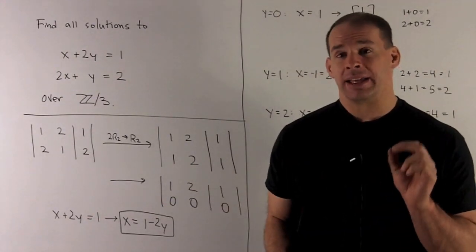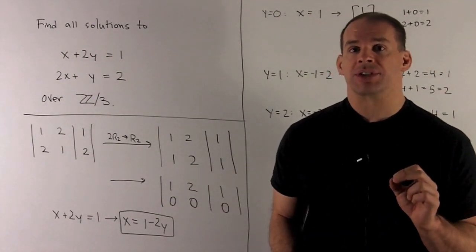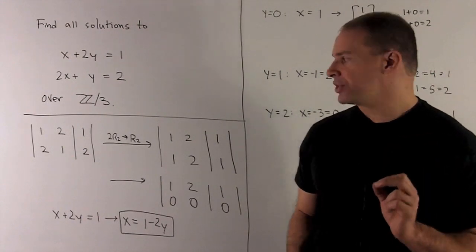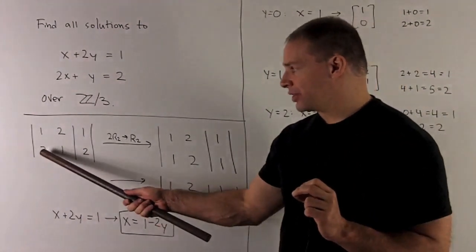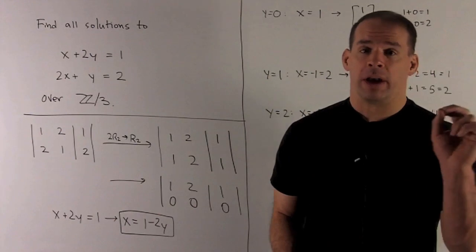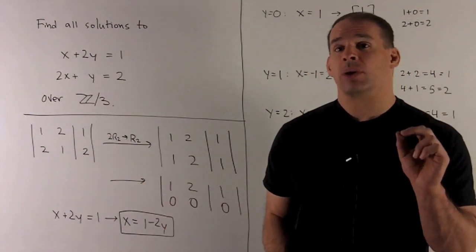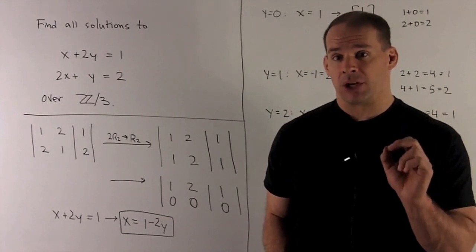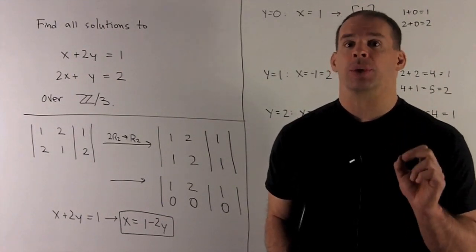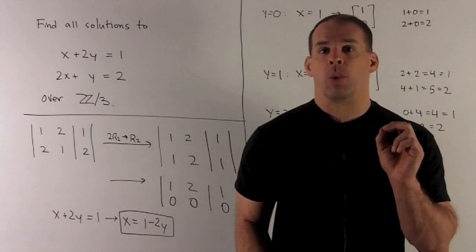Then we're just going to apply Gaussian elimination and take a look at what happens. My first step is going to be to target this entry here. We have a 1 up in our upper left-hand corner, so that's where we would want it. I'm going to target the entry right below that, which is my 2. I'm going to turn that 2 into a 0.